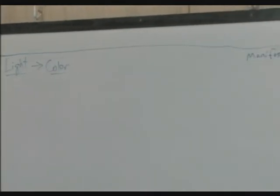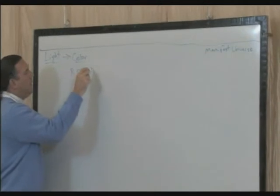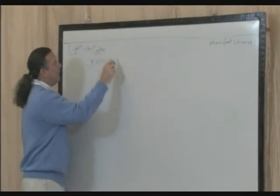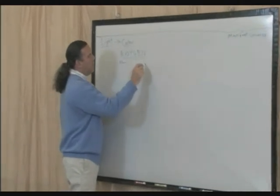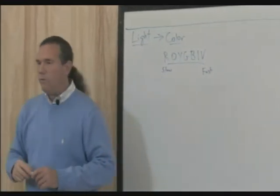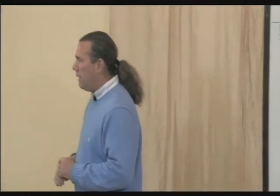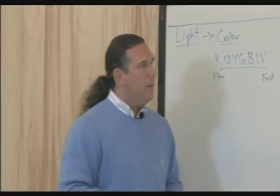Within the color scale that we're used to — ROYGBIV — red, orange, yellow, green, blue, indigo, violet. The slowest frequency is at one end, the fastest at the other. These are the resonant frequencies seen as expressions of light throughout the universe. So we go from light, to color, and then to number.